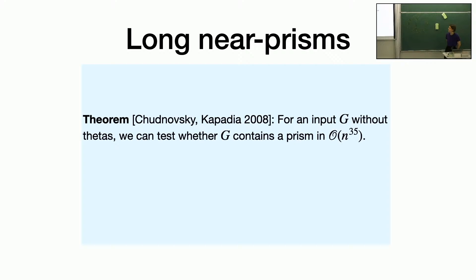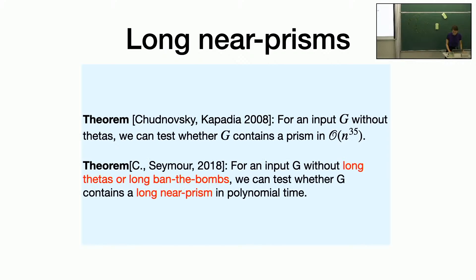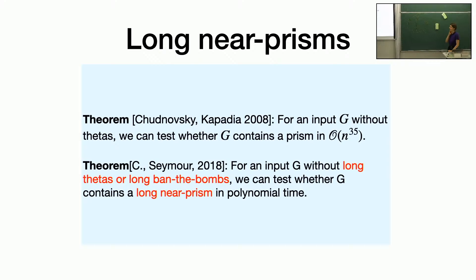In 2008, Chudnovsky and Kapadia proved that if there is an input graph G without thetas, they can find a prism — a prism being essentially the same thing as a near prism except the triangles have to be vertex-disjoint. We proved something similar in the long case, though their techniques didn't directly work for our scenario. We were able to use a somewhat similar algorithm structure. This was the hardest part to prove — once we got this, we got everything else in the long even hole algorithm in about a day. It's also the computationally most expensive step: the actual asymptotic running time just depends on our ability to test for long near prisms.